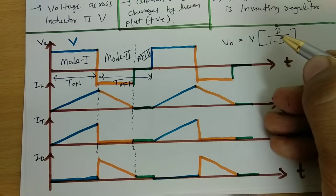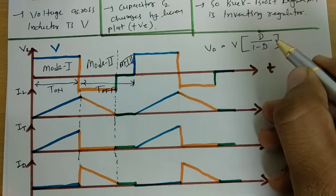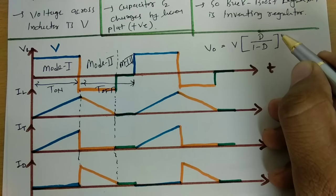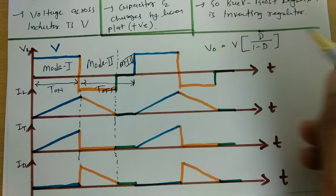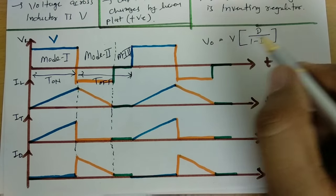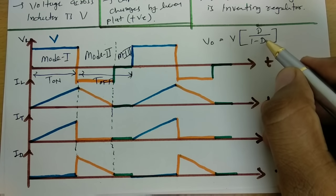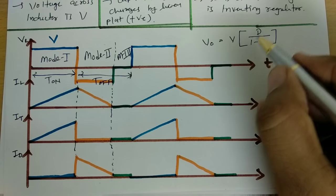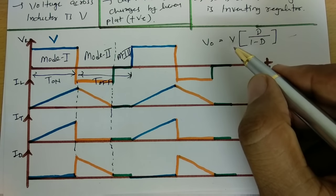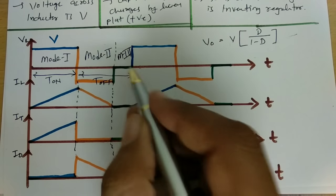To verify: if duty cycle is 0.25, then 0.25 divided by 0.75 equals Vs by 3, which is lower than V - that is a buck converter. If duty cycle is 0.75, then 0.75 divided by 0.25 equals 3V - that is a boost converter. This is the circuit operating in discontinuous mode.